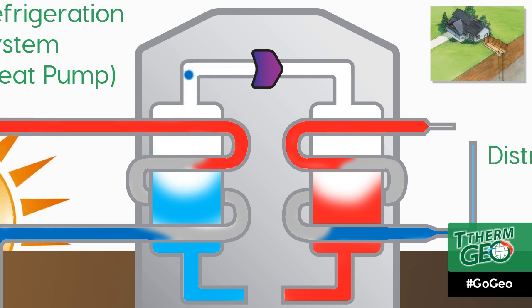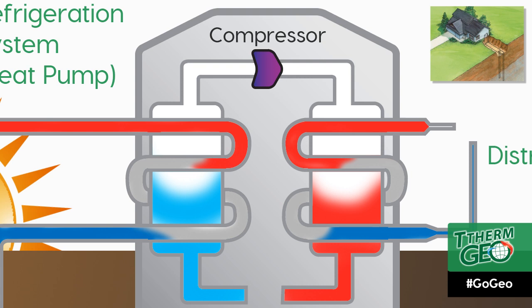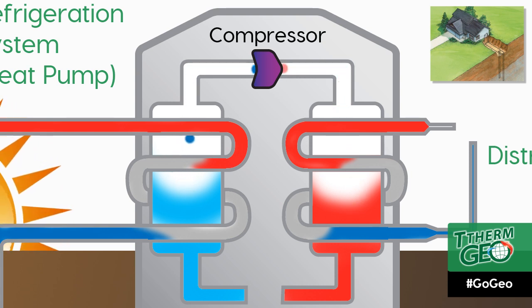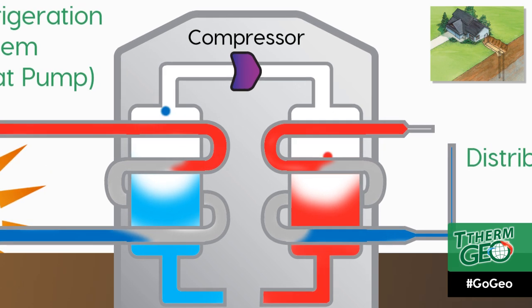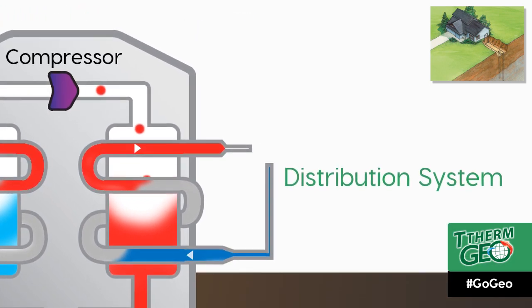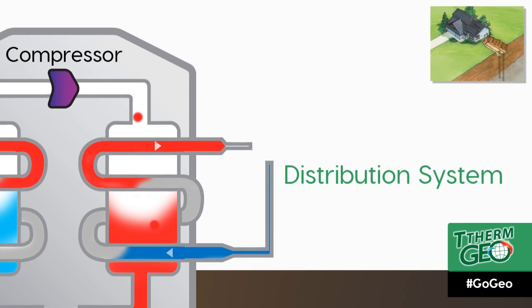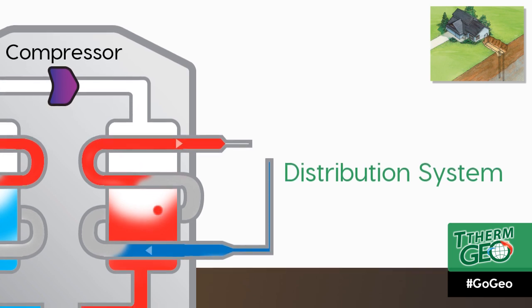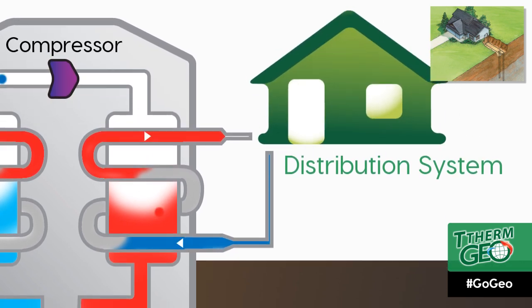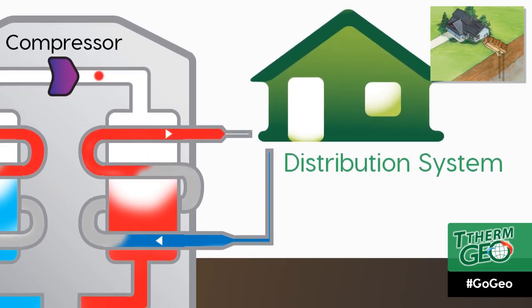Then, that gas carries the collected heat to a compressor to be compressed, which increases the temperature of the gas even more. The hot gas then carries the heat to the distribution system heat exchanger, where it easily releases its heat into the forced air or radiant system to condition the home or business.